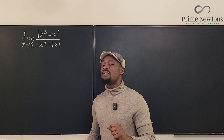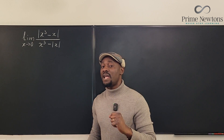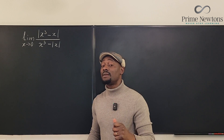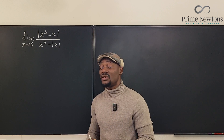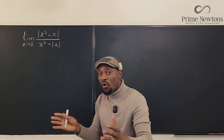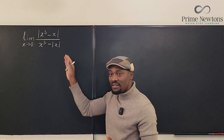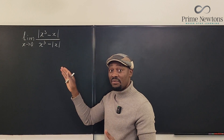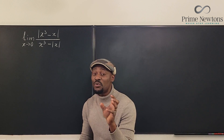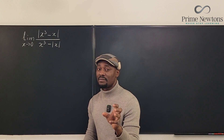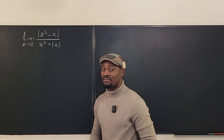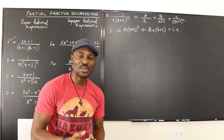Secondly, sometimes even when you plug it in, what you think is the answer might just not be the answer for your limit. Always rewrite the absolute value function in such a way that you can choose what you want — that's what you call freedom. Let's get into it.